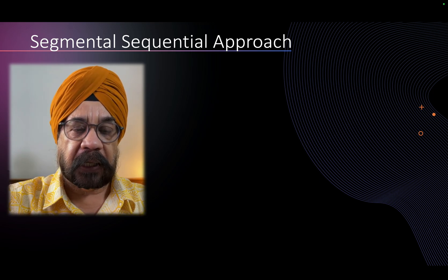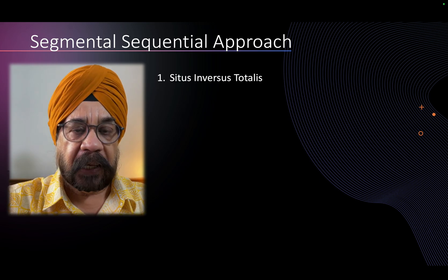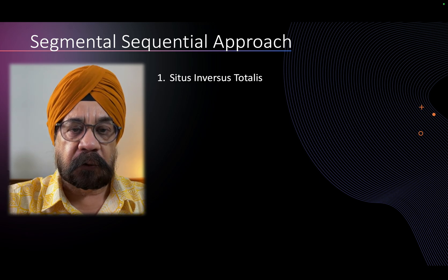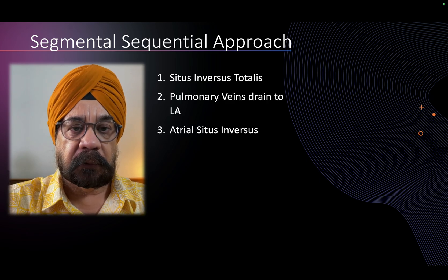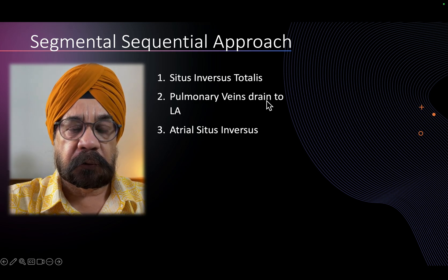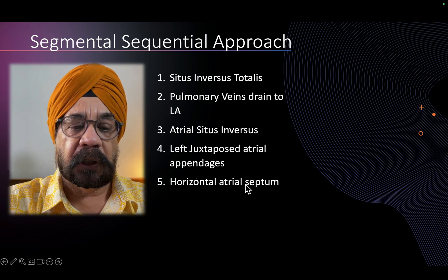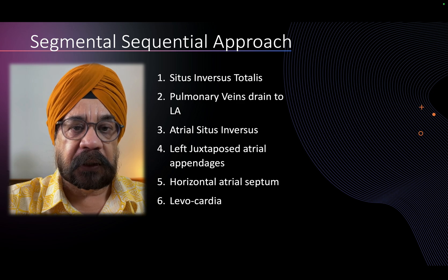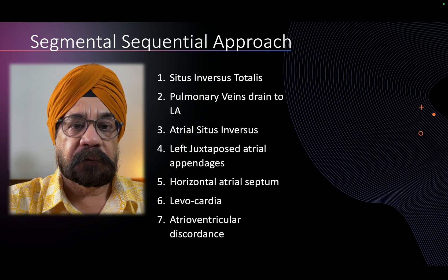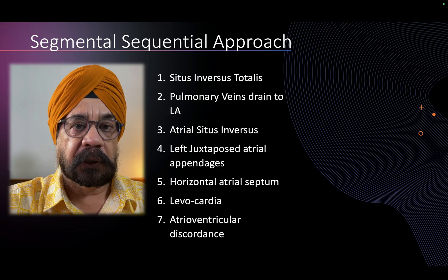Using the segmental sequential approach, I showed you this complex case and what findings to include in the written report. The report would include: this fetus has situs inversus totalis — not situs ambiguus or heterotaxy, but situs inversus totalis. This patient had the left atrium on the right side, as expected in situs inversus totalis, with the pulmonary veins draining into the left atrium. There was a juxtaposed atrial appendage. The heart was lying on the left side — levocardia.